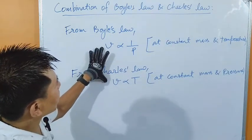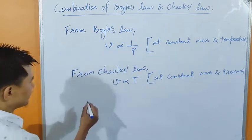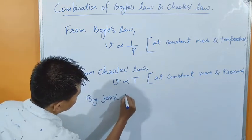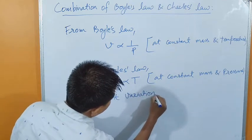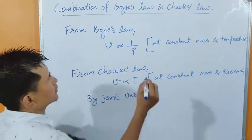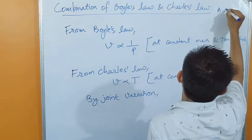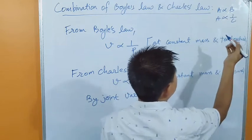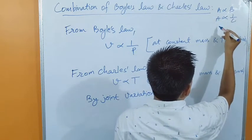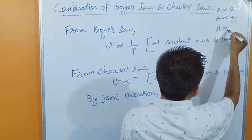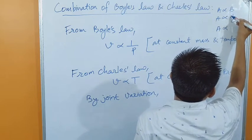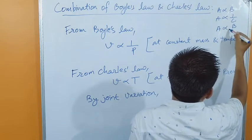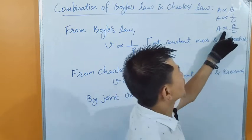So if we combine this by joint variation — I will let you know the rule of joint variation here. If A varies B, and if A varies 1 upon C, then by joint variation, we can write this as one A. Where B is in the numerator, B will remain in the numerator, and this C is in the denominator, so C will remain in the denominator. This is the rule of joint variation.